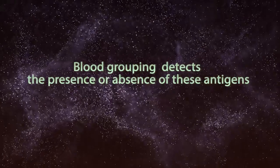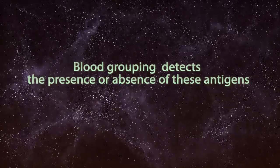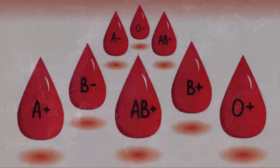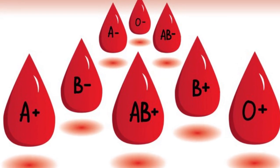Blood grouping detects the presence or absence of these antigens to determine a person's ABO blood group and RH type.